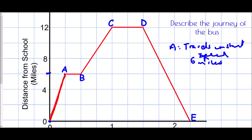At B, this is a plateau — it's a flat line. So what must be happening between A and B? Well, the bus has stopped, so it must be picking up some students at the bus stop.